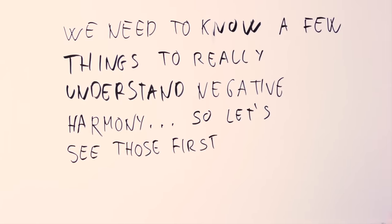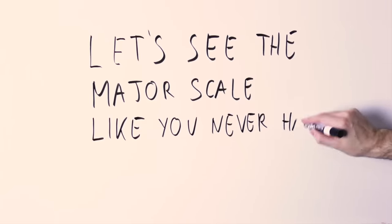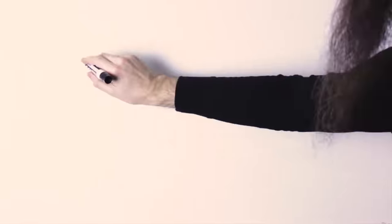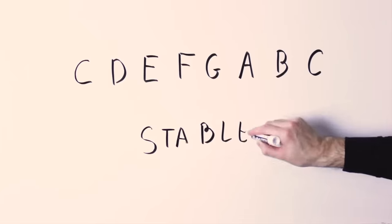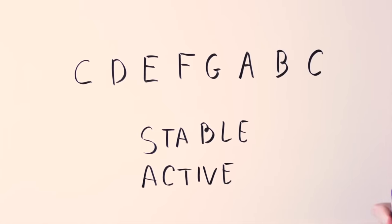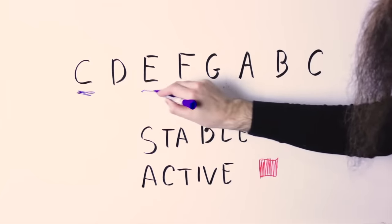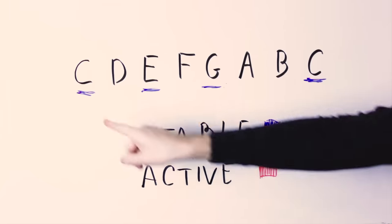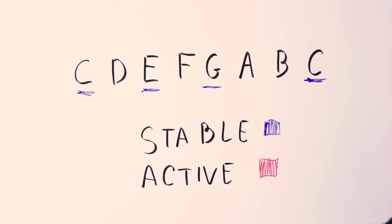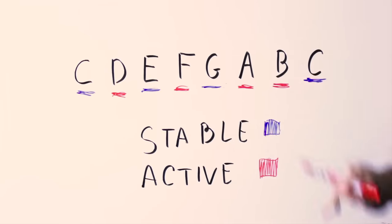So let's start seeing how a major scale, a standard major scale works. Let's work in C major. The notes of C major are C, D, E, F, G, A, B. Those notes though are not all created equal. Some of those notes are stable and some others are active. Specifically C, E and G, the notes of the tonic triad, are stable, and all the other notes D, F, A and B are active.